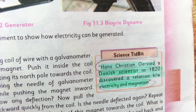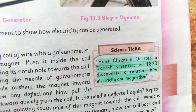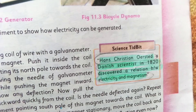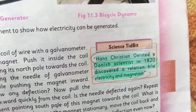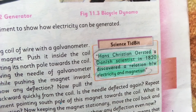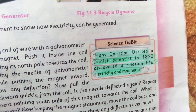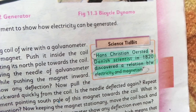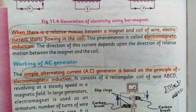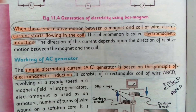Hans Christian Ørsted, a Danish scientist, in 1820 discovered a relation between electricity and magnetism. He discovered that when there is a relative motion between a magnet and a coil of wire, electric current starts flowing in the coil.